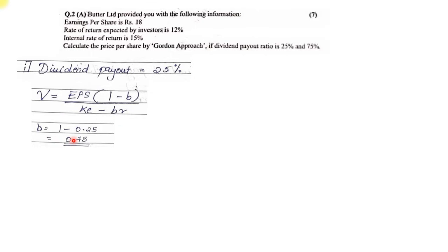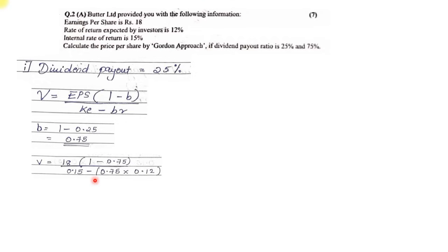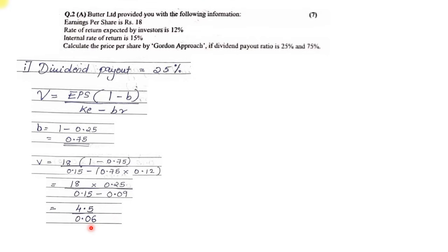Substituting: V = 18 × (1 − 0.75) ÷ (0.15 − 0.75 × 0.12). Solving: 18 × 0.25 = 4.5 in the numerator; 0.15 − 0.09 = 0.06 in the denominator. Dividing 4.5 ÷ 0.06, the price per share comes to rupees 75 per share for the dividend payout ratio of 25 percent.